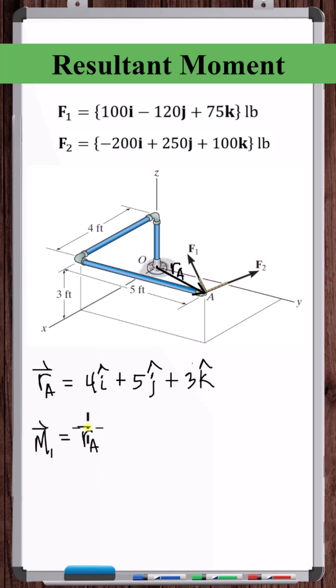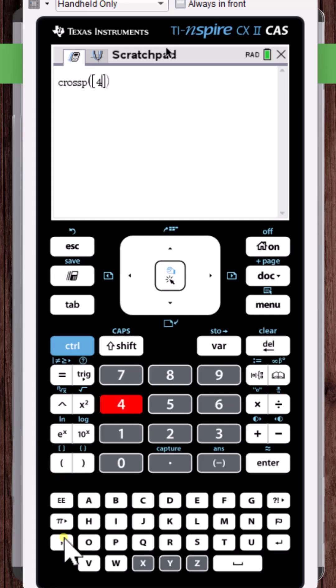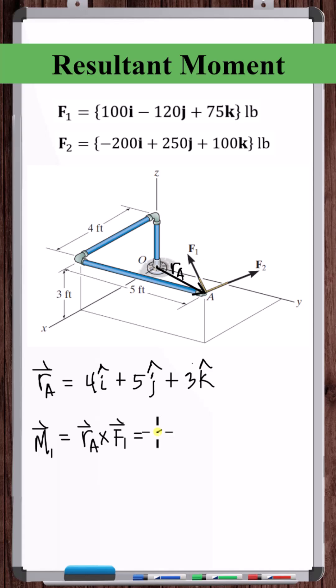So M1 is Ra cross F1. Use our calculator to get the cross product. M2 is Ra cross F2.